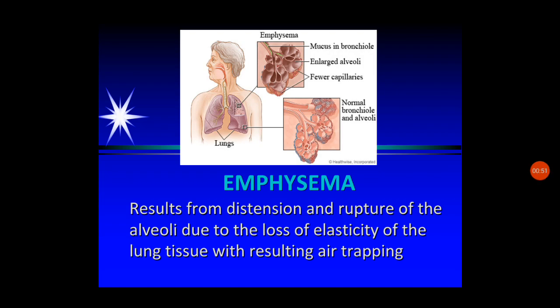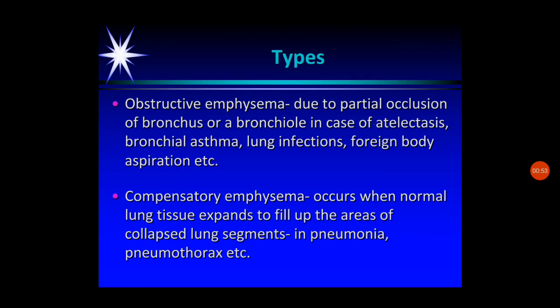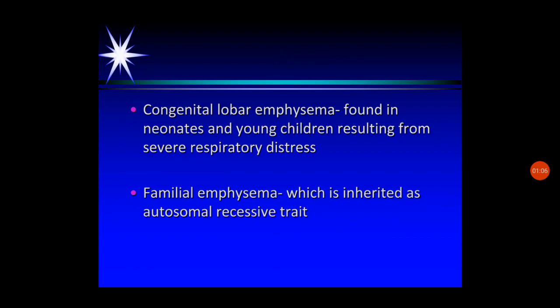The types of emphysema and the etiology go hand in hand. There are mainly four types of emphysema: the first is obstructive emphysema, the second is compensatory emphysema, the third is congenital lobar emphysema, and the fourth is familial emphysema.